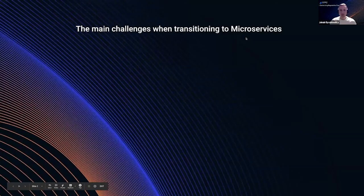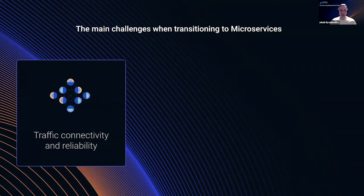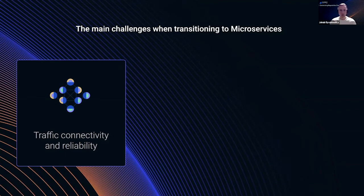When you transition from a monolithic application to microservices, you've got a couple of challenges to overcome. The first one is traffic connectivity. Because you changed function calls to network calls, you now need service discovery to know where the destination service is that you are connecting to. And the second problem is that the network is not reliable, so we need circuit breakers, retries, timeouts, and so on.